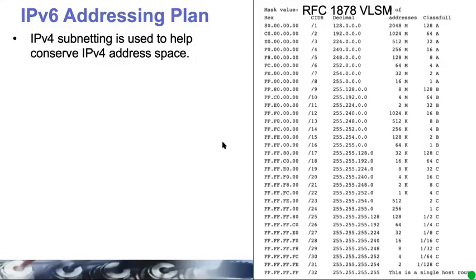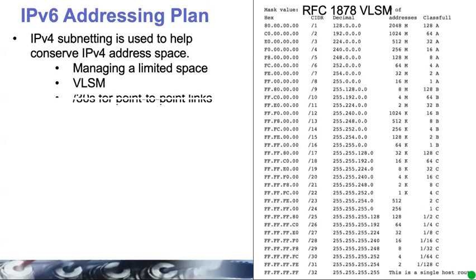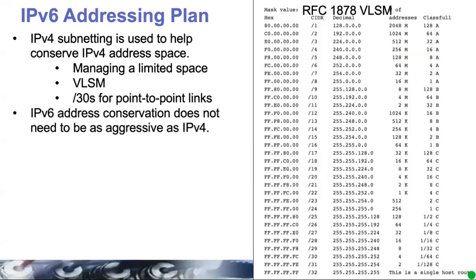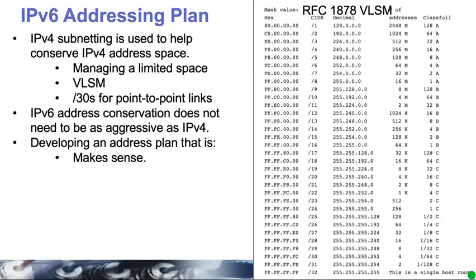Okay, so, an IPv6 addressing plan. In IPv4, we use a lot of our addressing plan — unfortunately, it centers around conserving address space, managing the limited space using VLSM, slash 30s or slash 31s for point-to-point links. In IPv6, address conservation is not an issue. So our addressing plan can be one that actually makes sense, is easy to use and easy to manage.